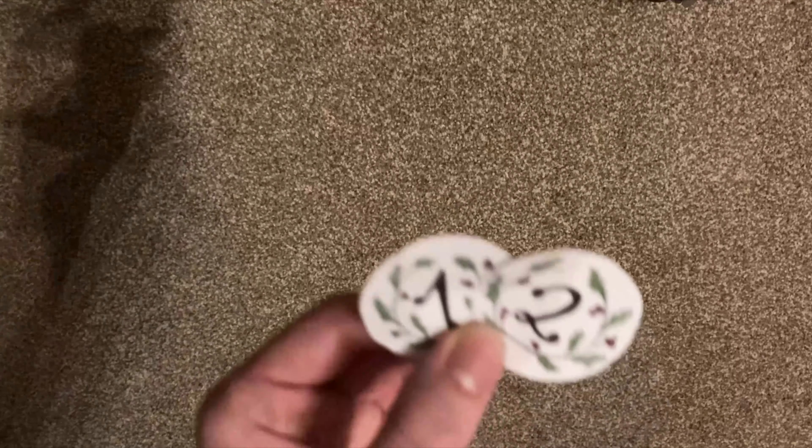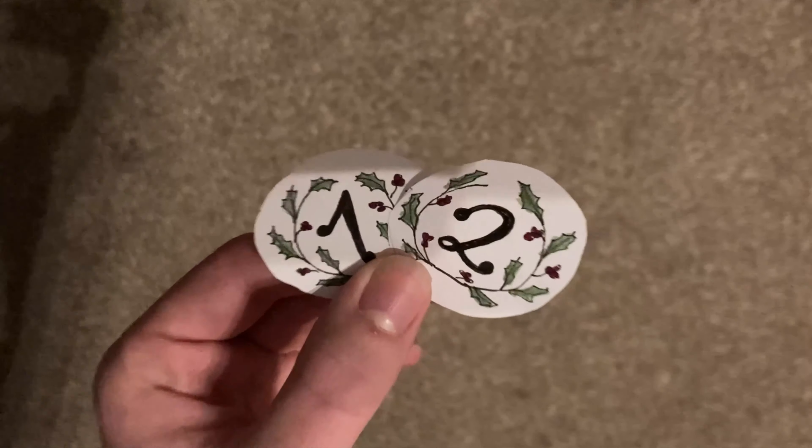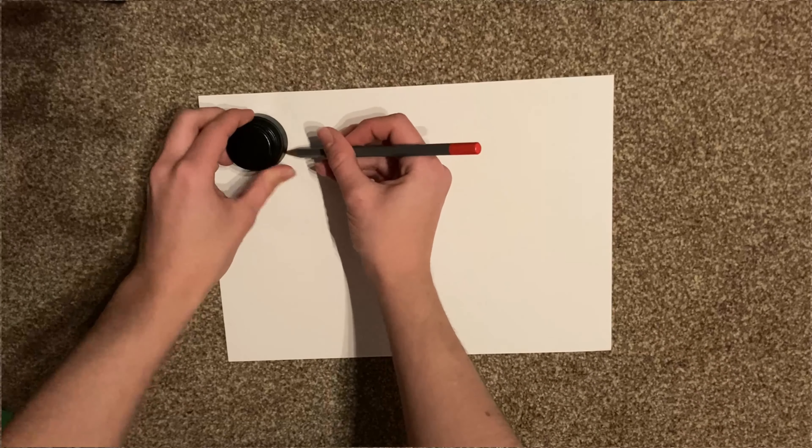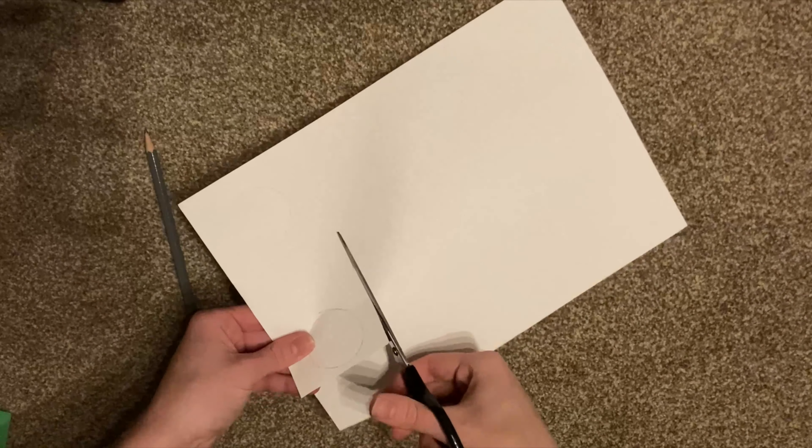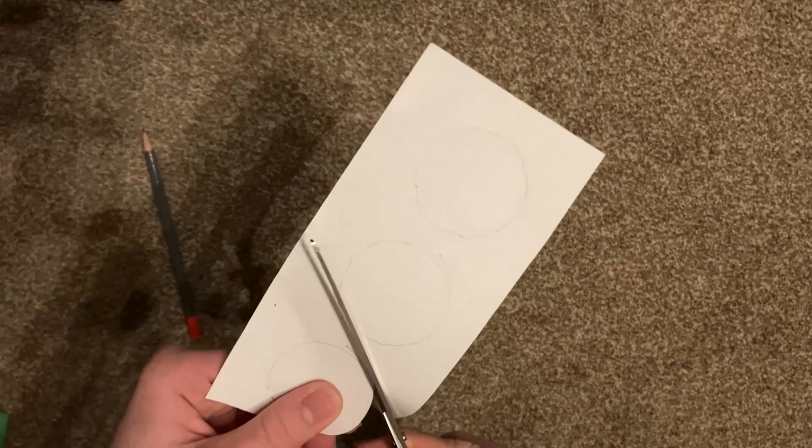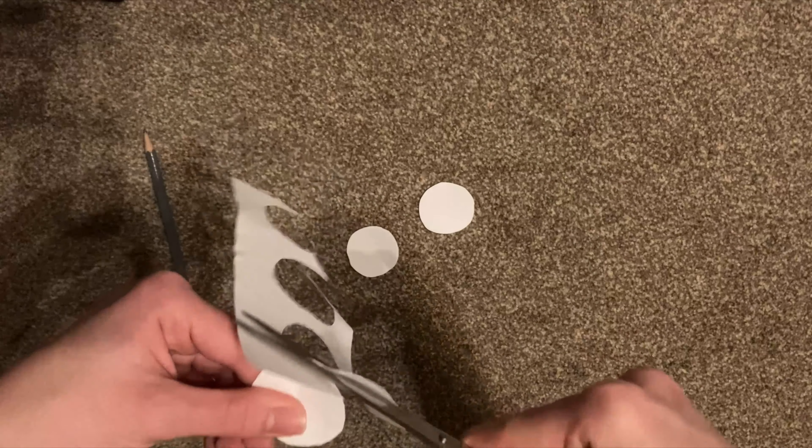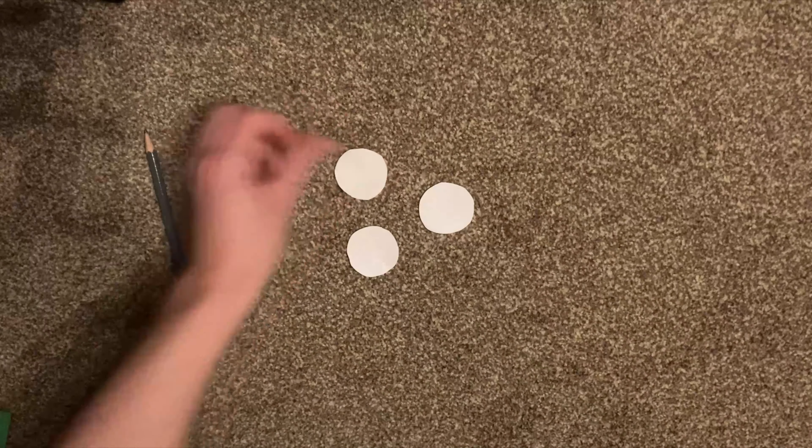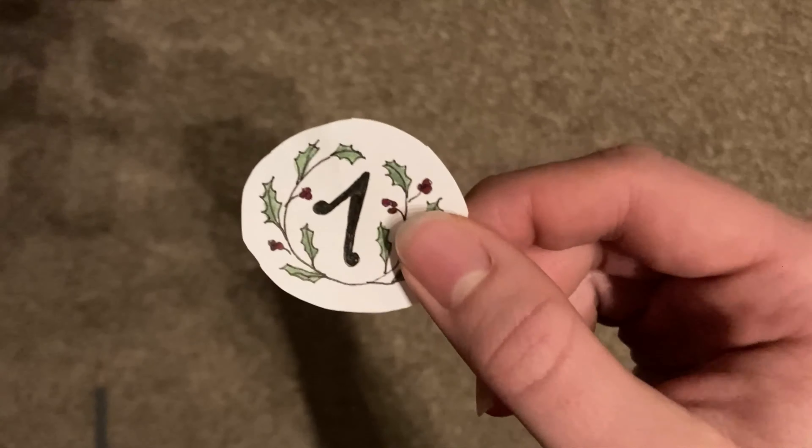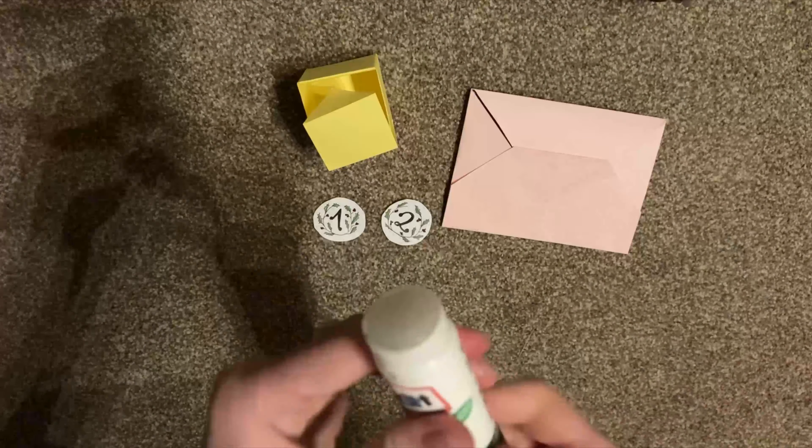Now we are going to the numbers which we can put on our boxes and envelopes to mark the days until Christmas. I've drawn circles on a white sheet of paper, cut them out, and drew a number and some holly berries and leaf on it.